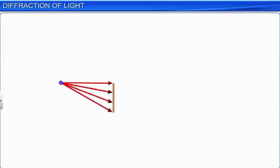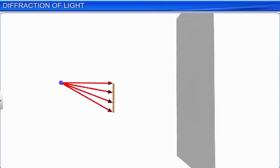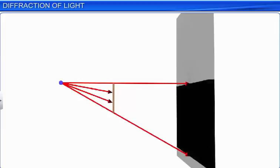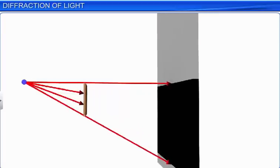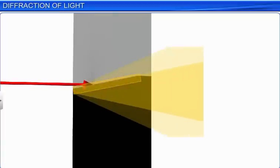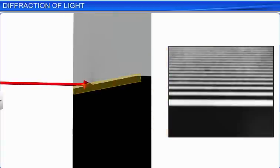If a screen is placed behind an opaque object, light from a point source travels in a straight line and forms a shadow on the screen. But if we look at the shadow closely, we observe that no sharp boundary exists between the shadowed and the illuminated regions. The illuminated region above the shadow contains alternate bright and dark fringes because of diffraction of light, and this pattern is called a diffraction pattern.